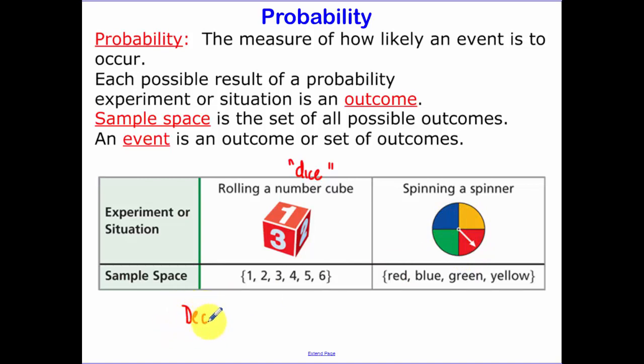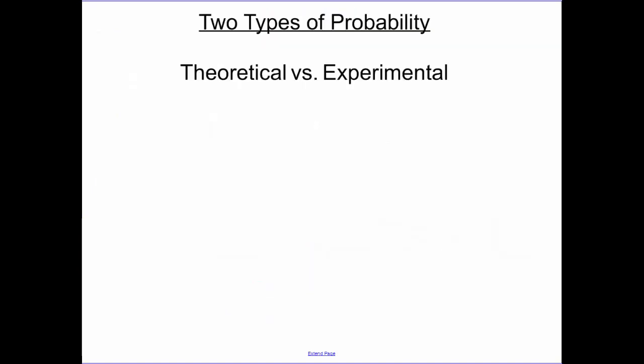We're going to be talking a lot about a deck of cards. So you want to keep in mind that those are our sample space. There's two types of probability, theoretical versus experimental.